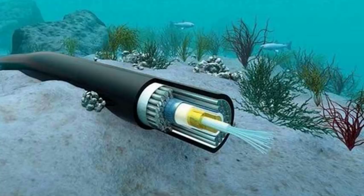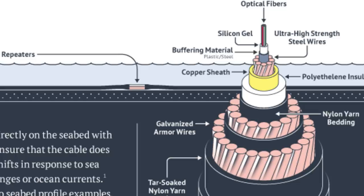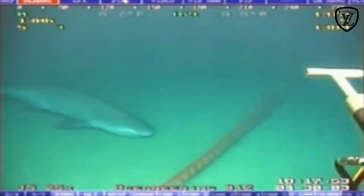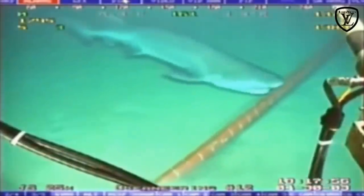Because they don't lay UTP cables under the ocean — they lay submarine cables. Submarine cables are made up of many layers: an optical fiber core surrounded by a silicone gel, then a buffering material of plastic or steel, then ultra high-strength steel wires for protection, surrounded by a copper sheath, then a polyethylene insulator, then nylon yarn bedding, then more galvanized armored wires, and finally they're tar-soaked in nylon yarn to protect them — because sharks like to bite things.